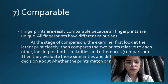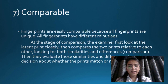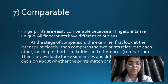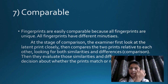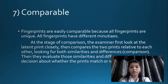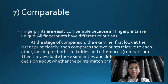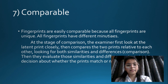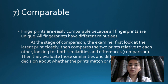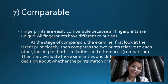According to fundamental principle seven, fingerprints are comparable. Fingerprints can be easily compared because all patterns are different and unique, and all fingerprints have different minutiae. At the stage of comparison, the examiner first looks at the latent print closely, then compares the two prints relative to each other, looking for both similarities and differences.